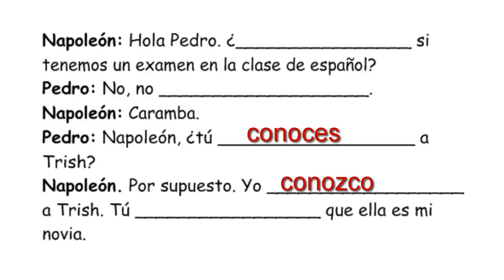Napoleon says: 'Por supuesto, yo conozco a Trish.' Then: 'Tú _____ que ella es mi novia?' Now this is where people get confused — they think 'girlfriend is a person, so use conocer.' But we're not saying you know her — that would be conocer. We're saying you know the fact that she is my girlfriend. Knowing a fact means saber: tú sabes que es mi novia. That's the quick review of saber and conocer.